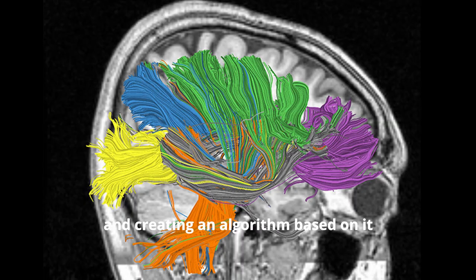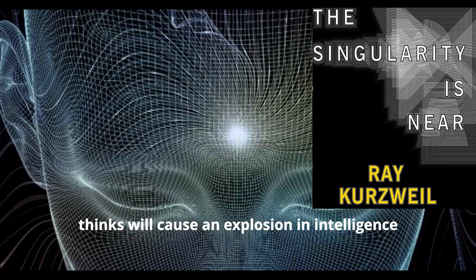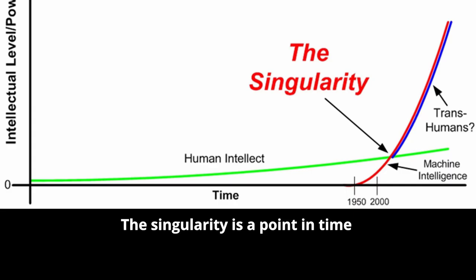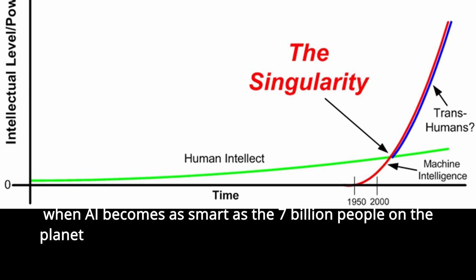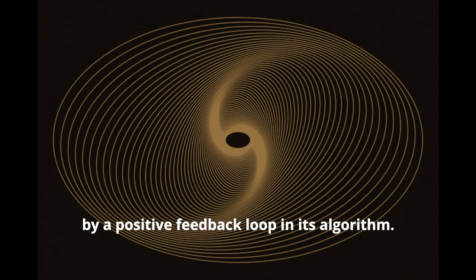Reverse engineering the brain and creating an algorithm based on it is what the director of Google, Ray Kurzweil, thinks would cause an explosion in intelligence. This is what is known as a singularity. A singularity is the point in time when AI becomes as smart as a billion people on the planet, and then rapidly surpasses it by a positive feedback loop in its algorithm.